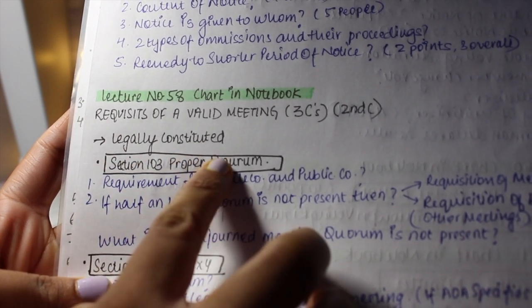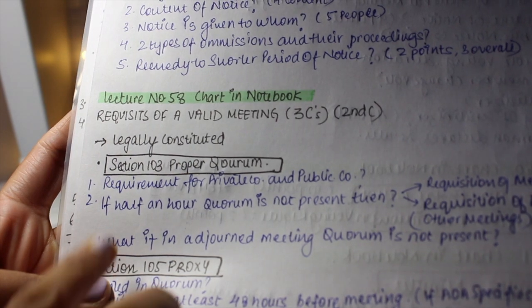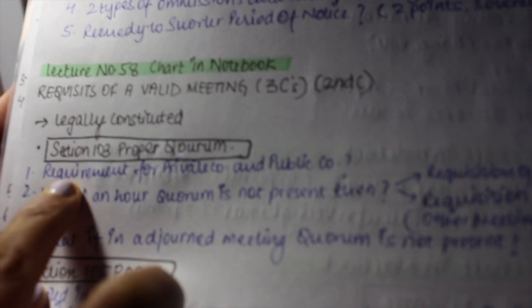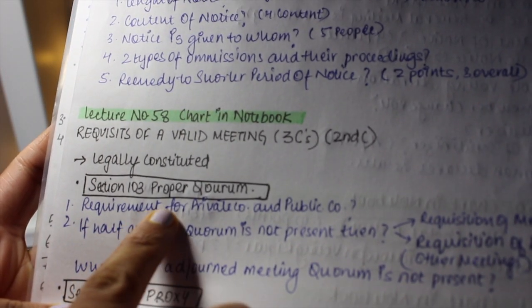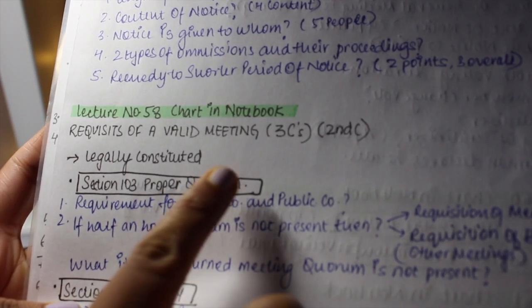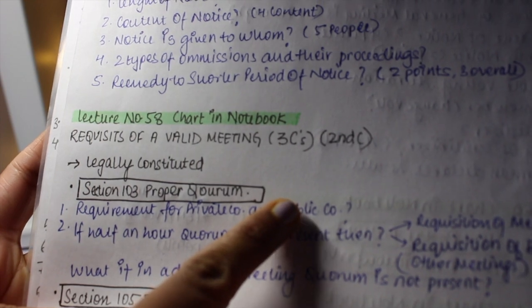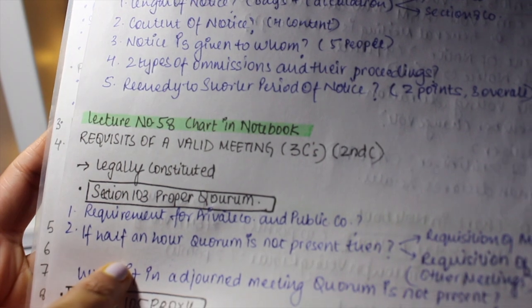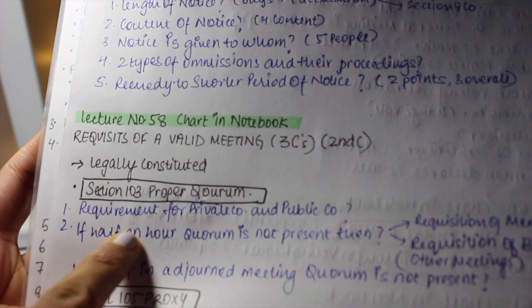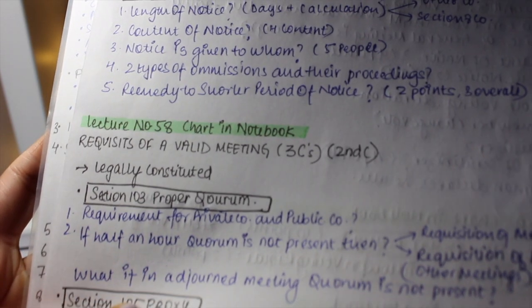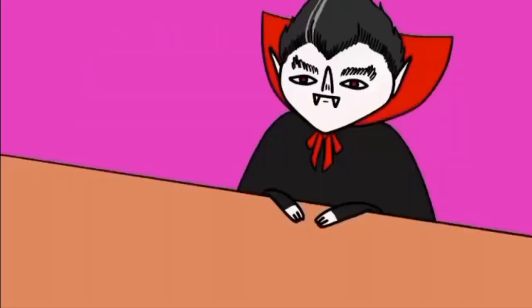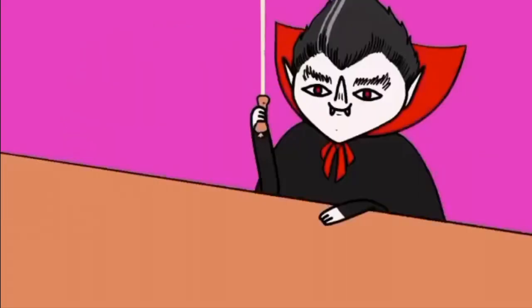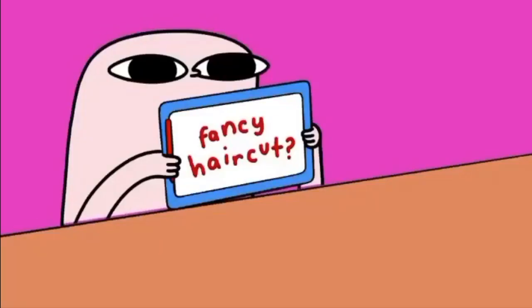In this lecture we had covered requisites of a valid meeting. Let's start with the heading. You have to write questions related to that specific subsection or section. First was section number 103: what was the proper quorum? In section 103 proper quorum, there were different requirements for private company and public company, so I had written requirement for private company and requirement of public company.